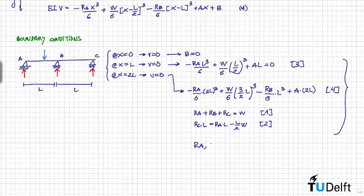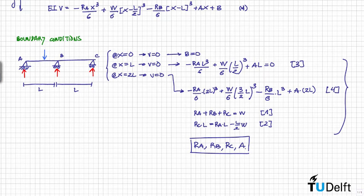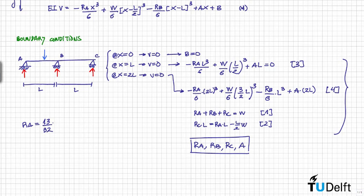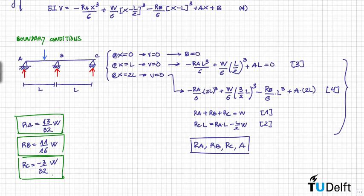This is a set of four equations with four unknowns: RA, RB, RC, and the constant of integration A. Rearranging and performing the proper substitutions, we find the reaction forces RA, RB and RC that we were looking for.